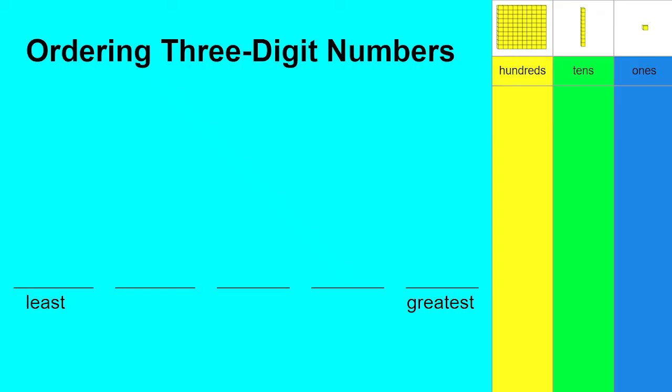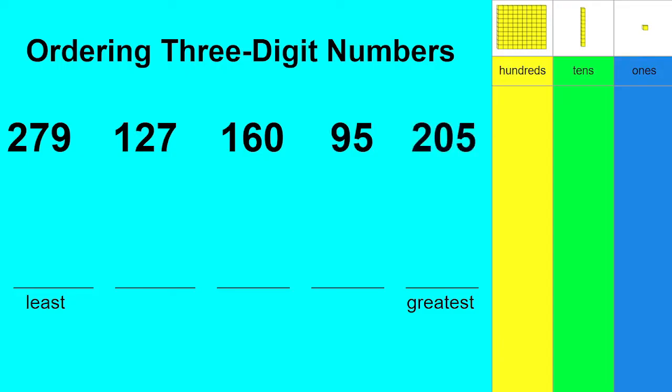Well, let's take a look! I'm going to write down some three-digit numbers and I would like for you to say them with me. 279, 127, 160, 95, 205.